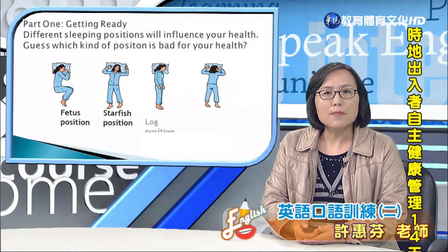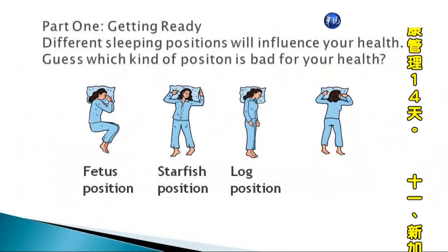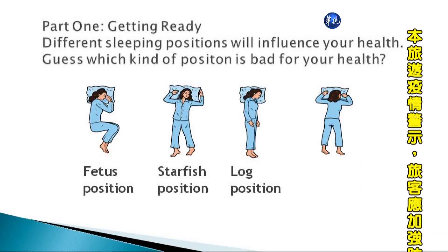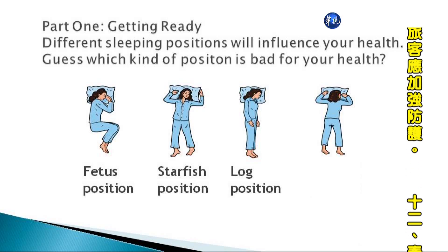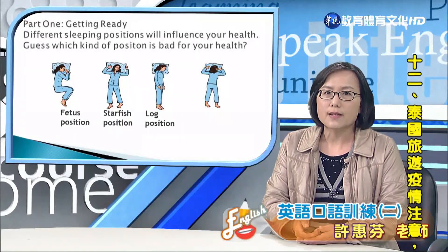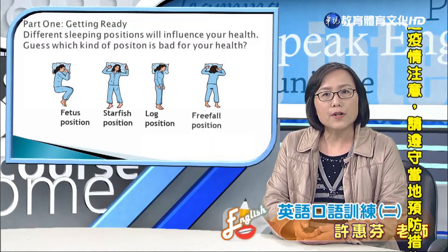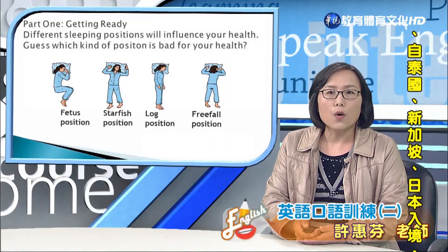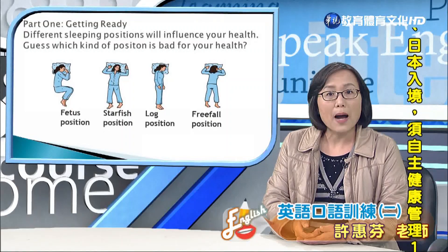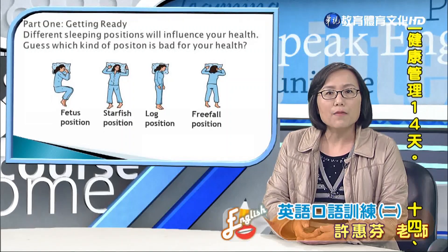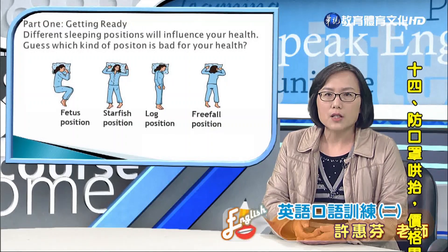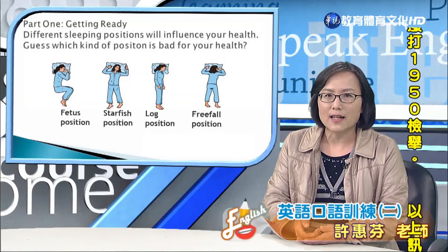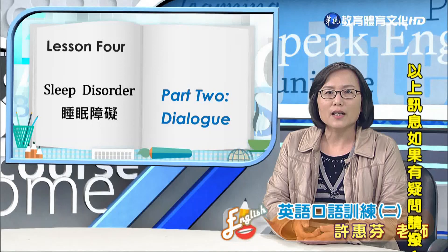The third position is log position. In this position, you sleep like a log — 就很像木頭這樣直直的一塊。And you sleep on the side, and your arms are straight at your side. 你是側睡的姿勢，手臂直直地在側邊。And the last position is free fall position. 這個就是所謂的自由落體姿勢。You sleep on your chest or on your stomach. 你是趴睡的，通常你的手臂會高舉，甚至高過你的頭。那我們再來看看這些姿勢哪些是好的，哪些是比較不好的。